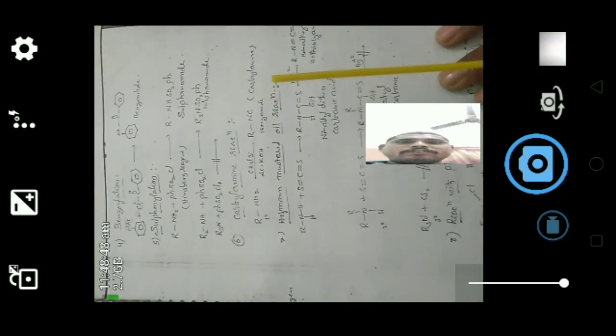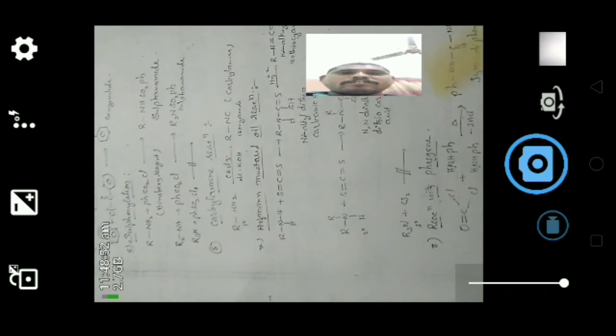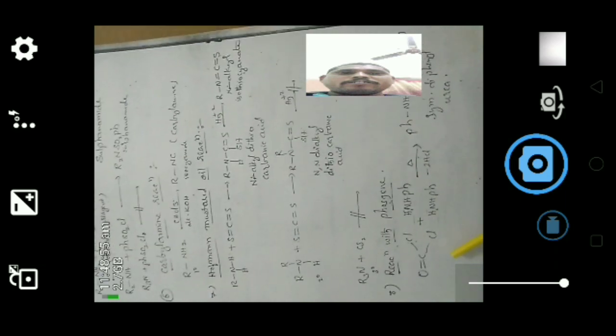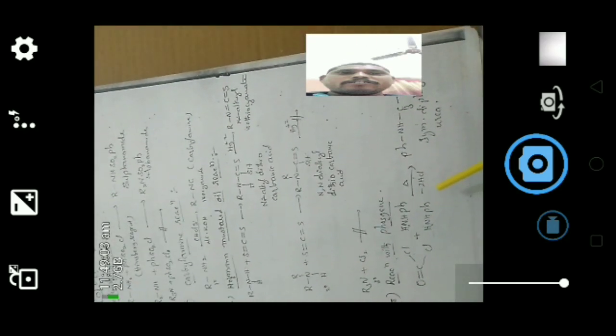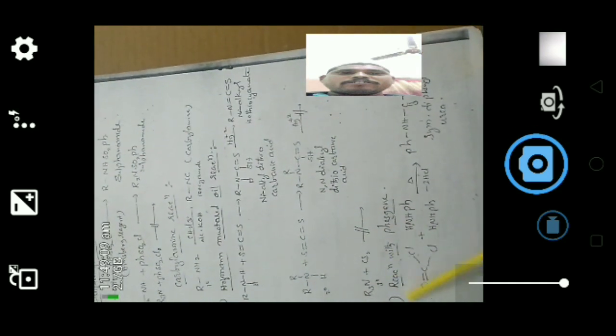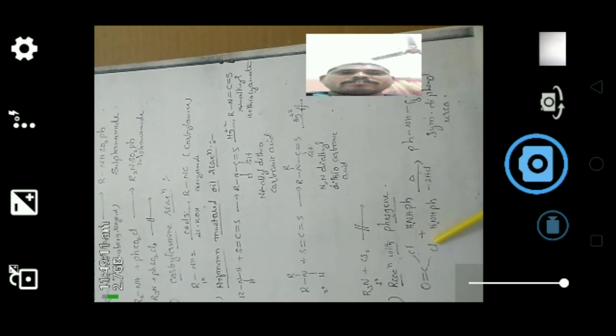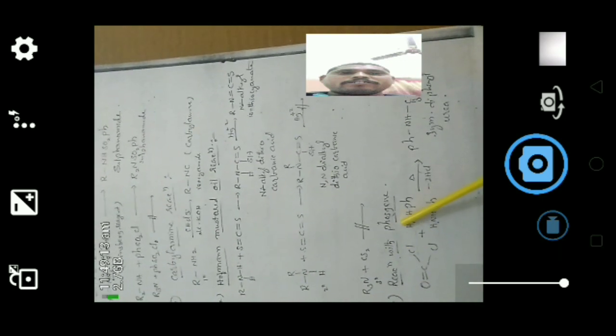Next is the reaction with phosgene (COCl₂). When phosgene reacts with two molecules of aniline on heating, by losing hydrochloric acid, it gives symmetrical diphenyl urea.